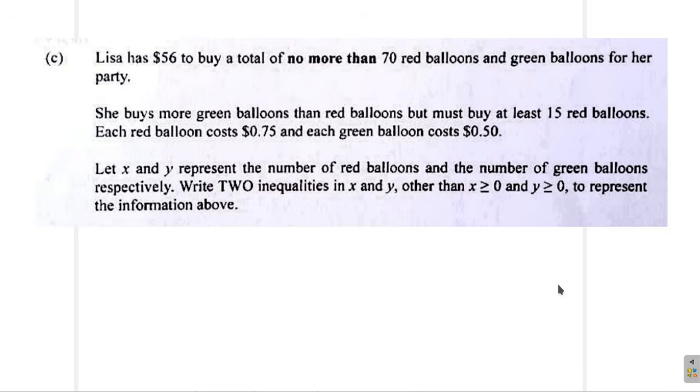She buys more green balloons than red balloons, but must buy at least 15 red balloons. Each red balloon costs 75 cents and each green balloon costs 50 cents. Let X and Y represent the number of red balloons and number of green balloons respectively.